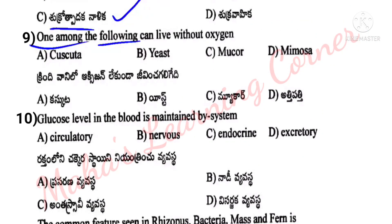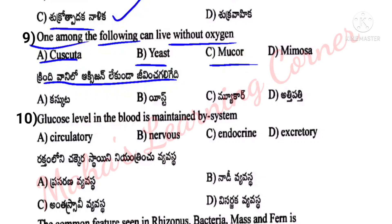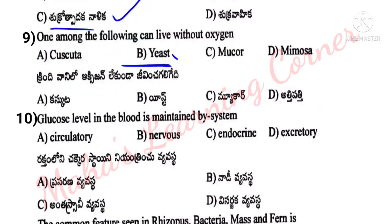Next question: One among the following can live without oxygen. Correct answer: Option B — Yeast. Yeast is the correct answer.